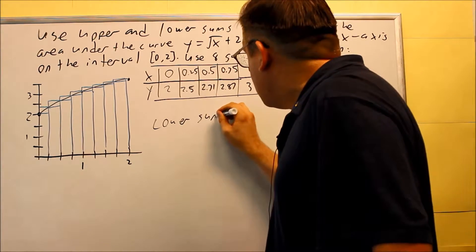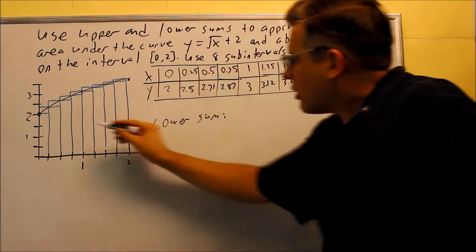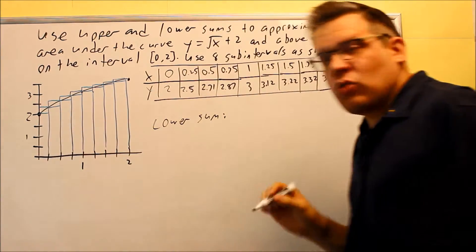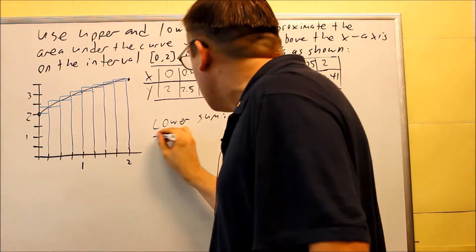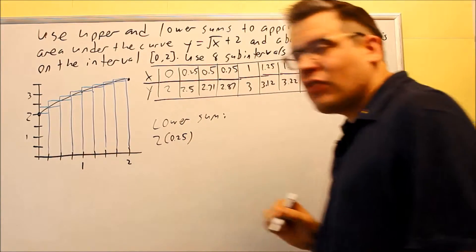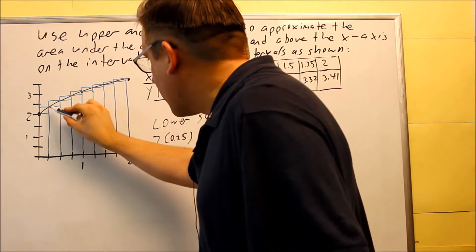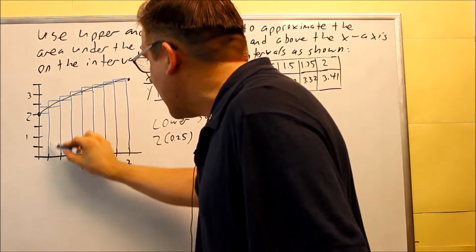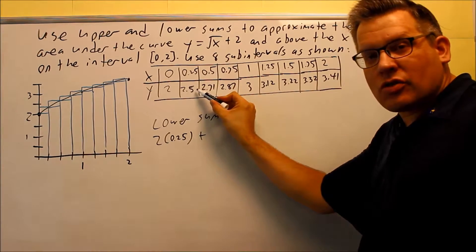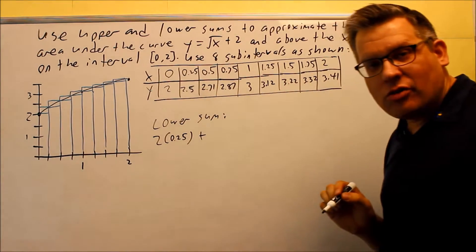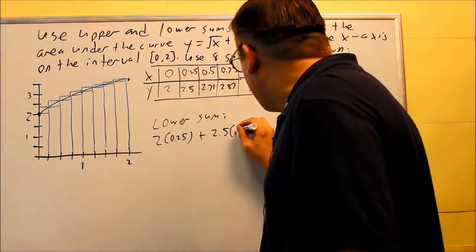Let's do lower sum. So for lower sum, we're going to look at the picture, and the picture is going to tell us what height we're going to grab off the table. Now the very first one has a height of 2, and it's going to have a width of 0.25. The next one, this rectangle that goes inside here, its height is going to be determined at 0.25. So I look at 0.25, and I see that there's a 2.5 there. The y value is the height that you're going to use for each of these rectangles.